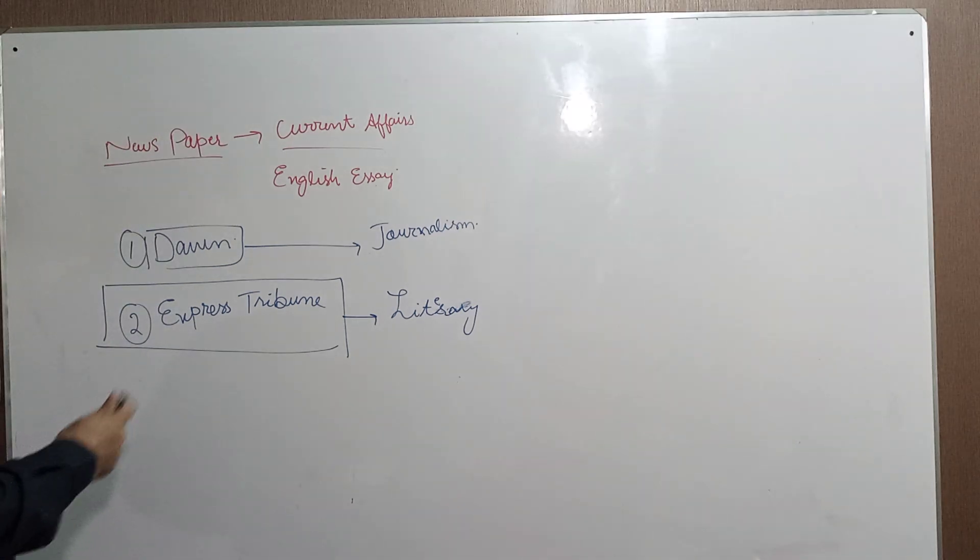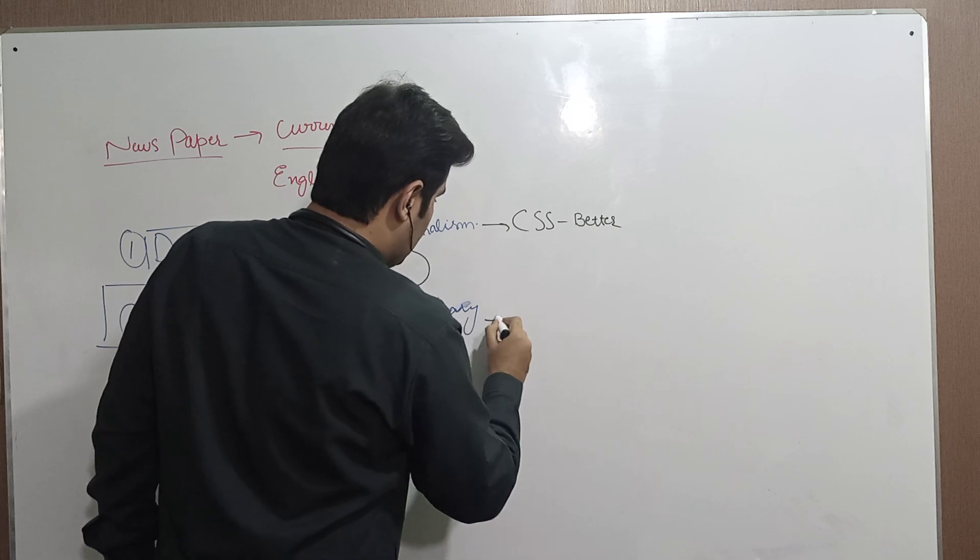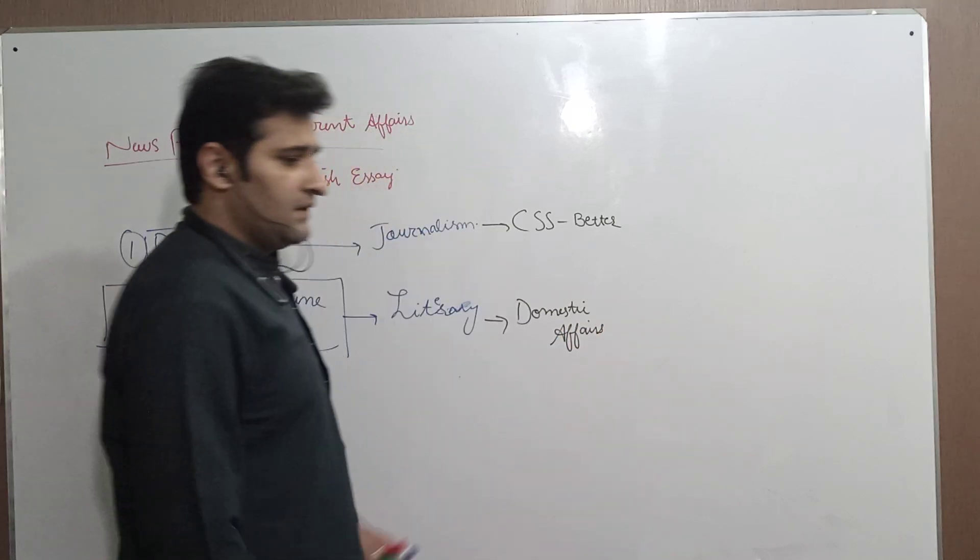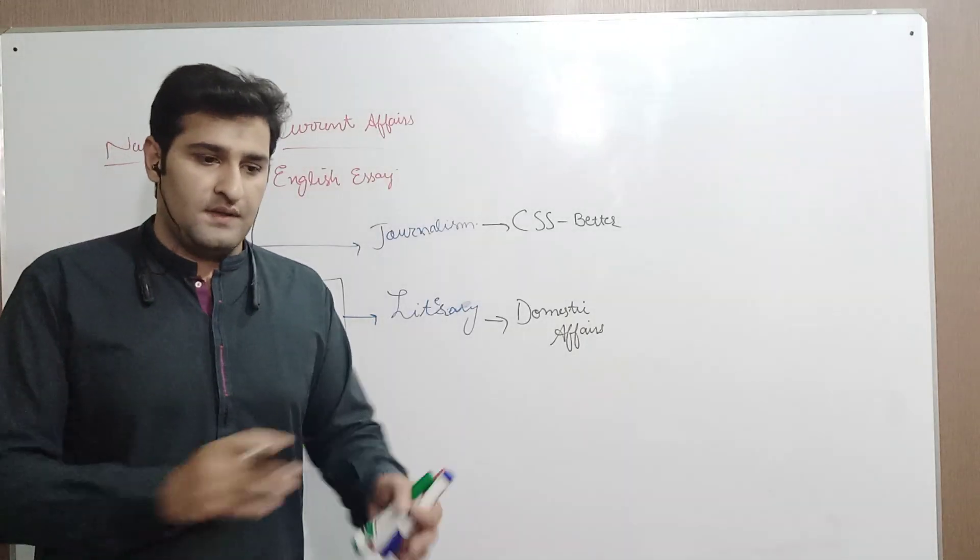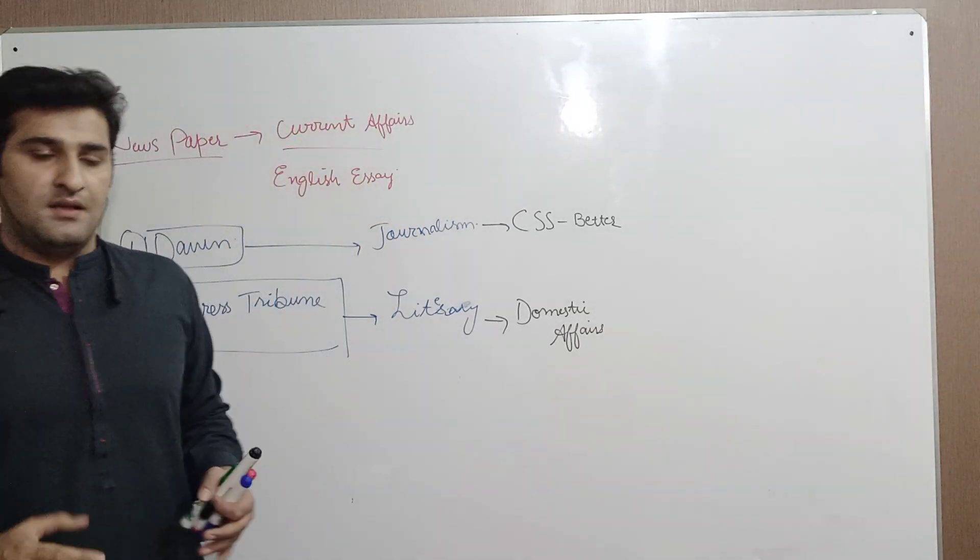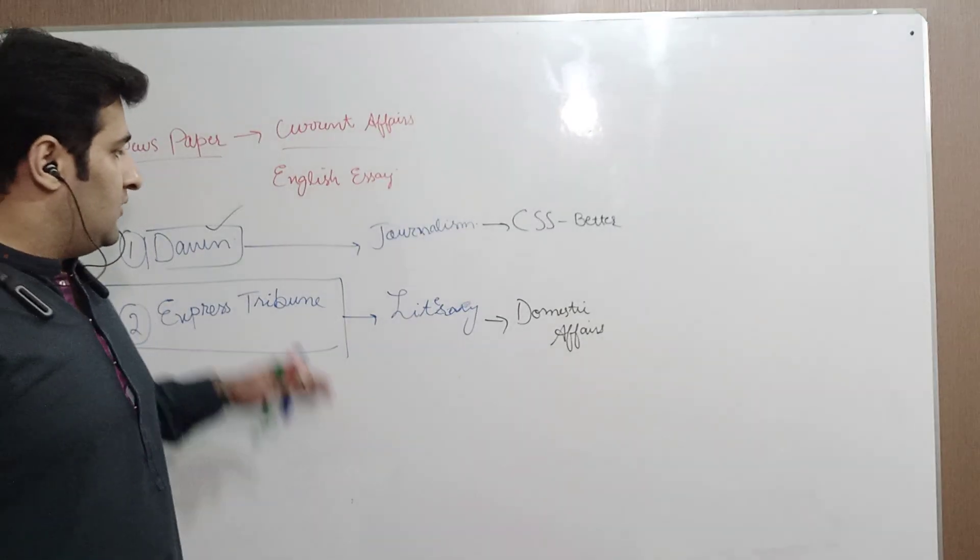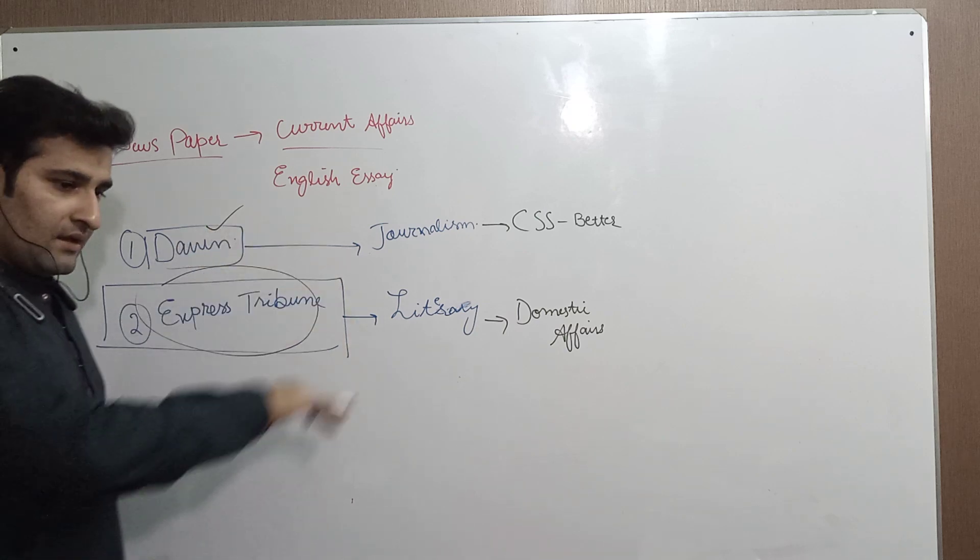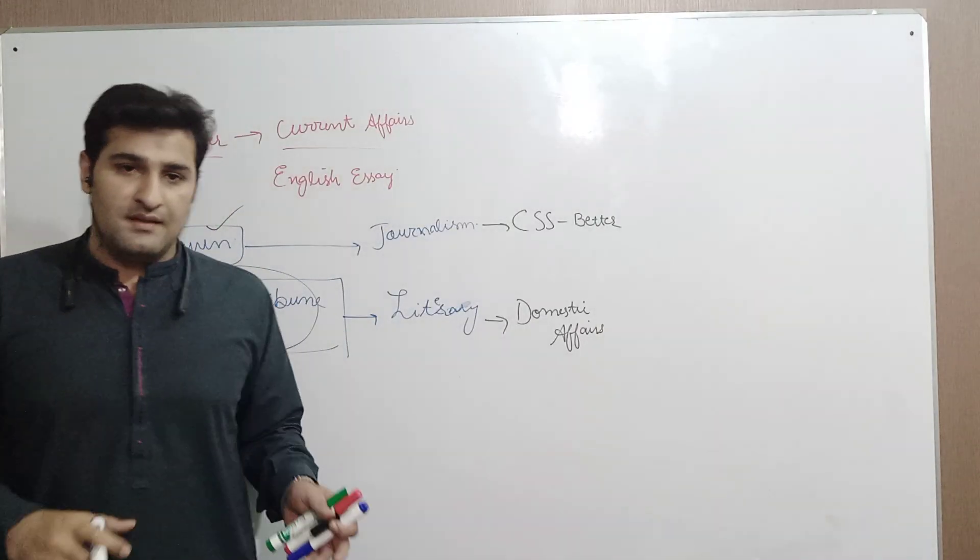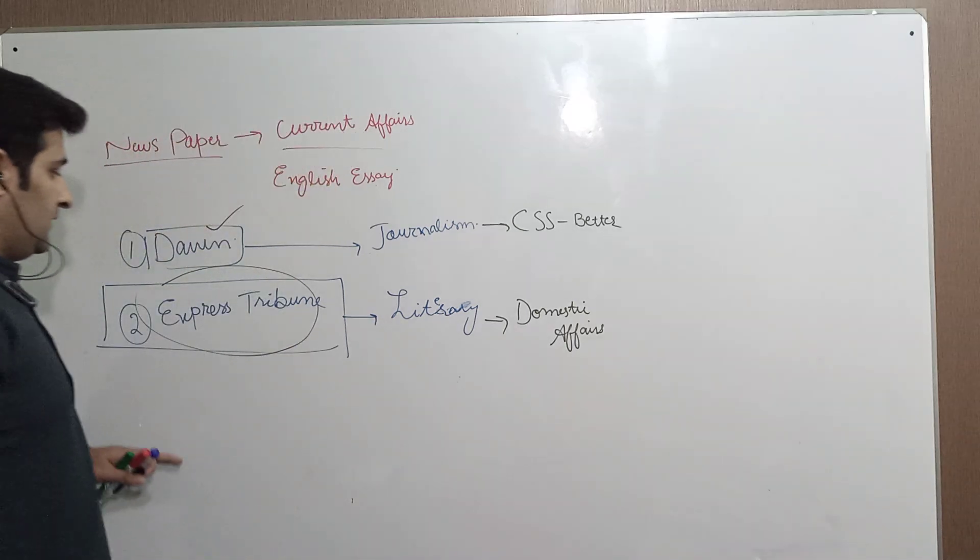When we talk about content, Dawn's content for CSS covers domestic affairs, political affairs, political developments, democracy, and all that. Express Tribune is also good, but for current affairs, if you need a different understanding of global and domestic issues, I would suggest that you read Dawn. This newspaper gives you the whole holistic idea from inside to outside. You get a complete tour of Pakistan when you read Dawn.